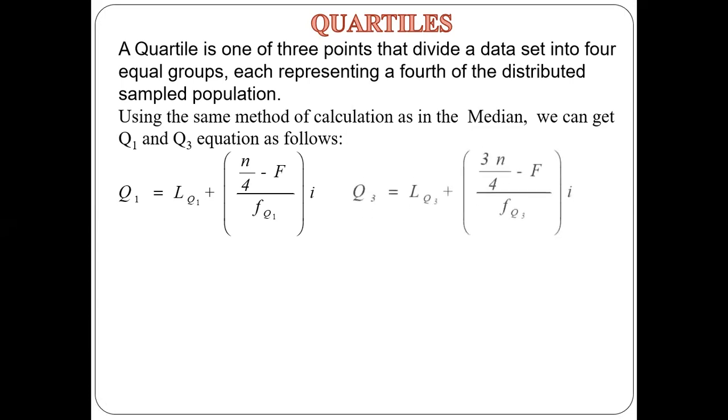Now we look at Q3, which is the upper quartile. L_Q3 is the lower class boundary of the upper quartile class. N is still the total frequency, F is cumulative frequency before the upper quartile class, F_Q3 is the frequency of the upper quartile class, and i is the class width.